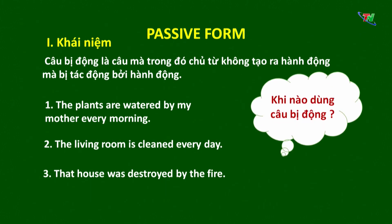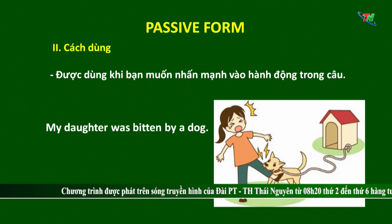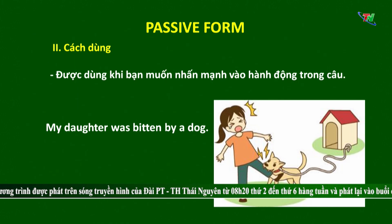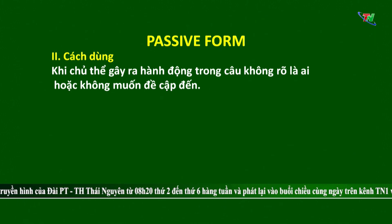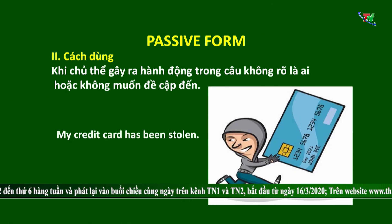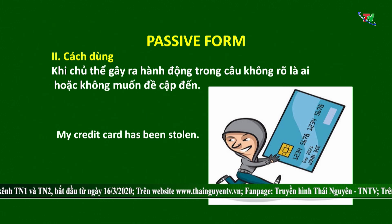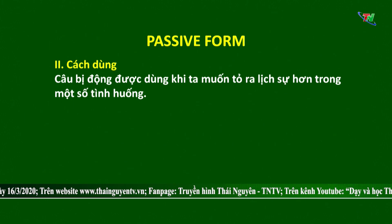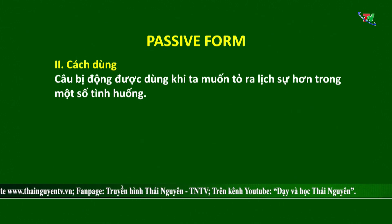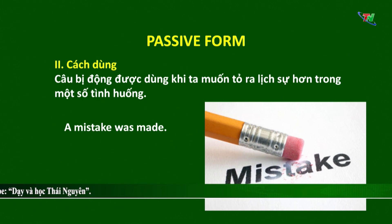Vậy khi nào thì chúng ta dùng câu bị động? Cách dùng thứ nhất, câu bị động được dùng khi bạn muốn nhấn mạnh vào hành động ở trong câu. Ví dụ: 'My daughter was bitten by a dog.' Ở đây cô muốn nhấn mạnh hành động là con gái của tôi bị cắn bởi một con chó. Cách dùng thứ 2, chúng ta dùng câu bị động khi chủ thể gây ra hành động trong câu không rõ ràng hoặc không muốn đề cập tới. Ví dụ: 'My credit card has been stolen.' Cái thẻ của tôi đã bị đánh cắp, nhưng ở đây không muốn đề cập tới là ai là người đã đánh cắp chiếc thẻ. Cách dùng thứ 3, câu bị động được dùng khi ta muốn tỏ ra lịch sự hơn trong một số tình huống — họ chỉ muốn nói là có một lỗi xảy ra chứ không muốn đề cập tới là ai đã làm ra lỗi này. Như vậy chúng ta đã vừa tìm hiểu xong cách dùng của câu bị động.